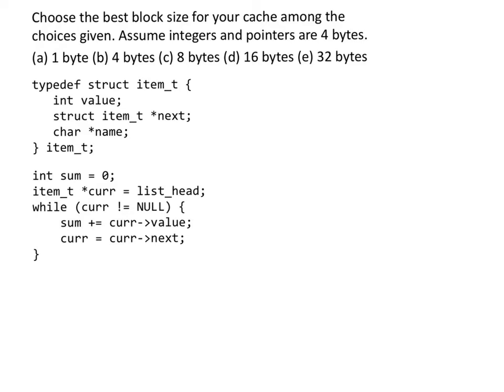Now let's take a look at what the code is actually doing. We begin with an integer value sum which has the value zero, and we have a pointer called cur that is pointing to a list head.